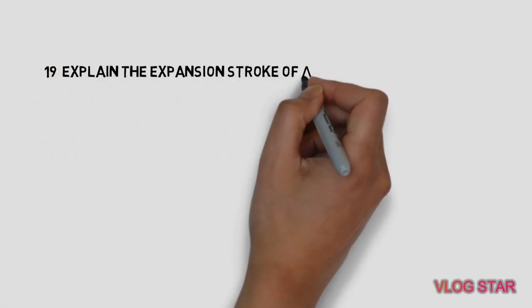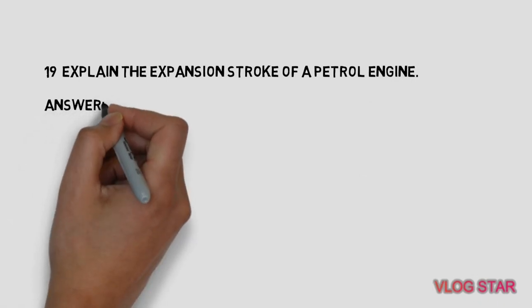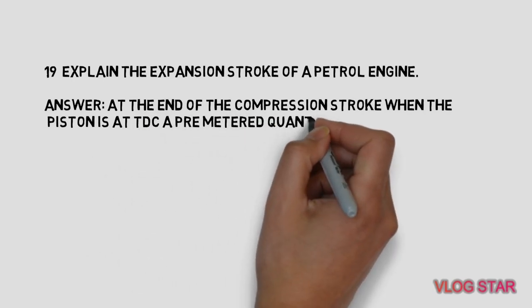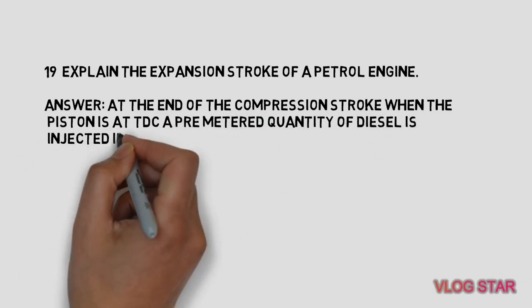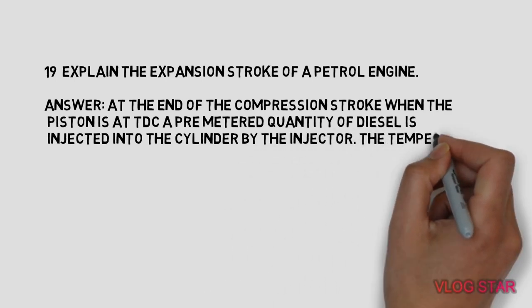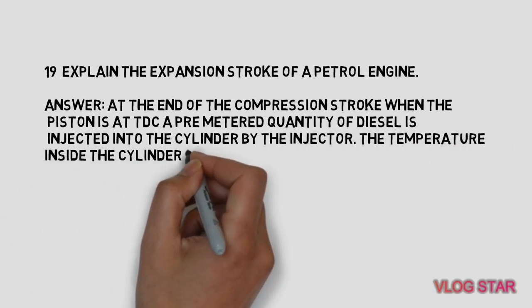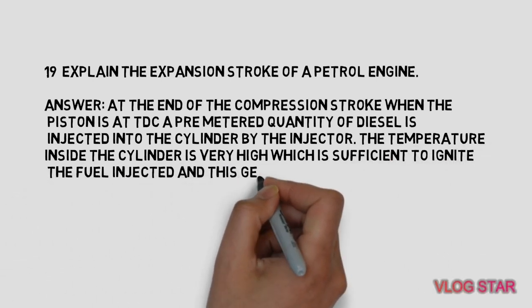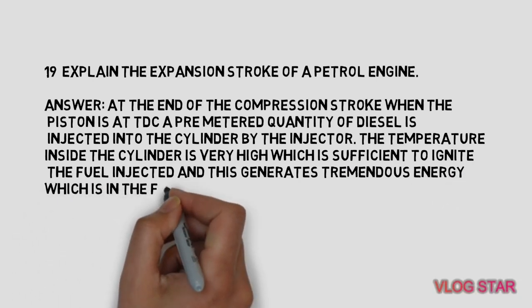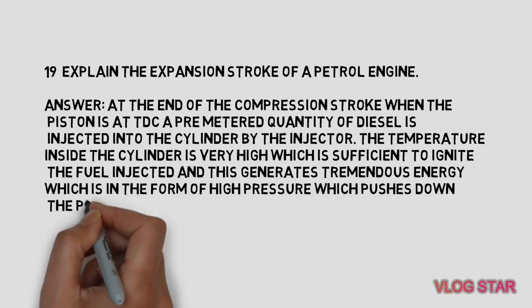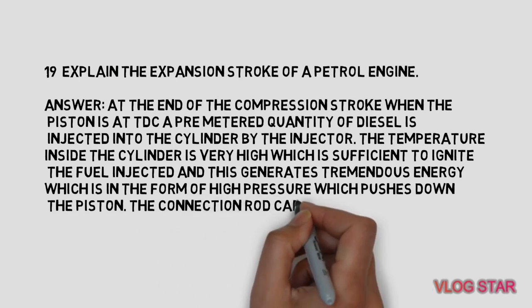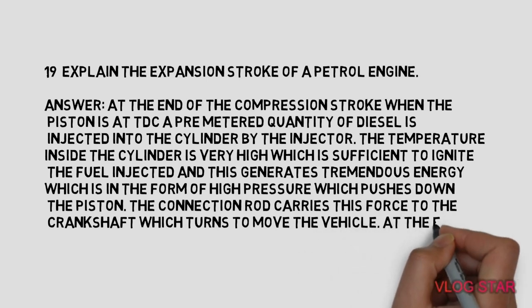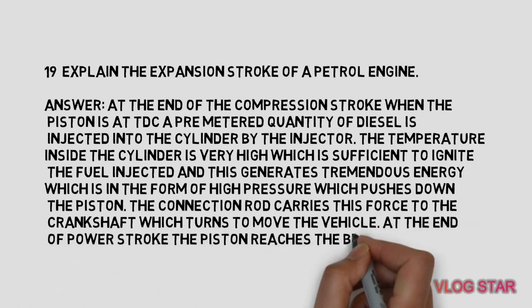Explain the power stroke of a petrol engine. At the end of the compression stroke, when the piston is at TDC, a pre-metered quantity of diesel is injected into the cylinder by the injector. The high temperature inside the cylinder ignites the fuel, generating tremendous energy in the form of high pressure which pushes the piston down. The connecting rod carries this force to the crankshaft, which turns to move the vehicle. At the end of the power stroke, the piston reaches BDC.